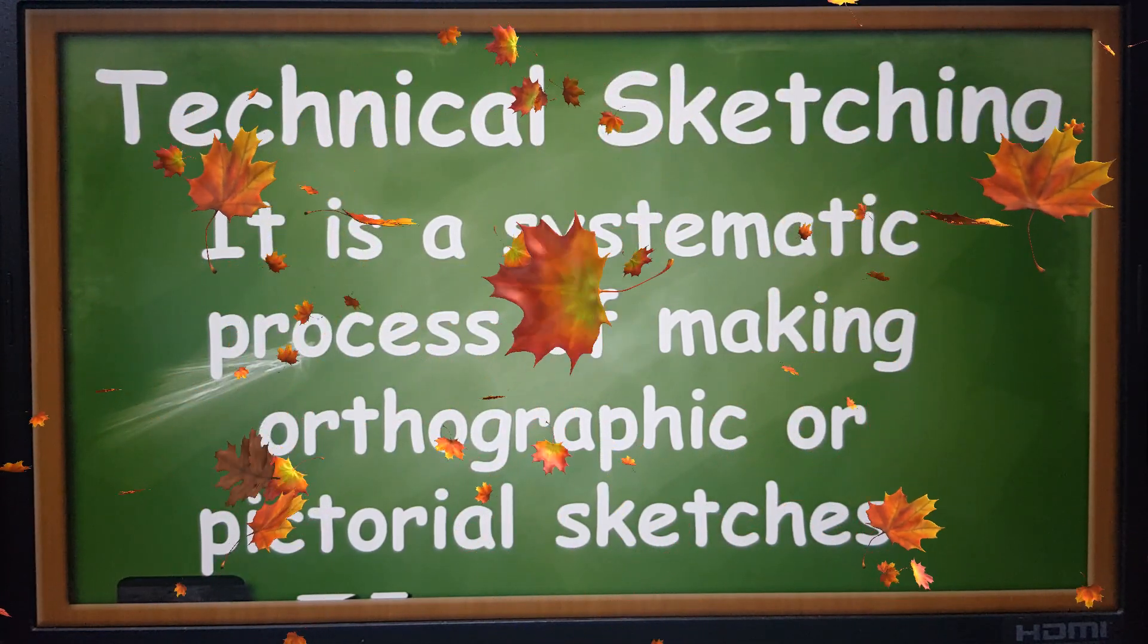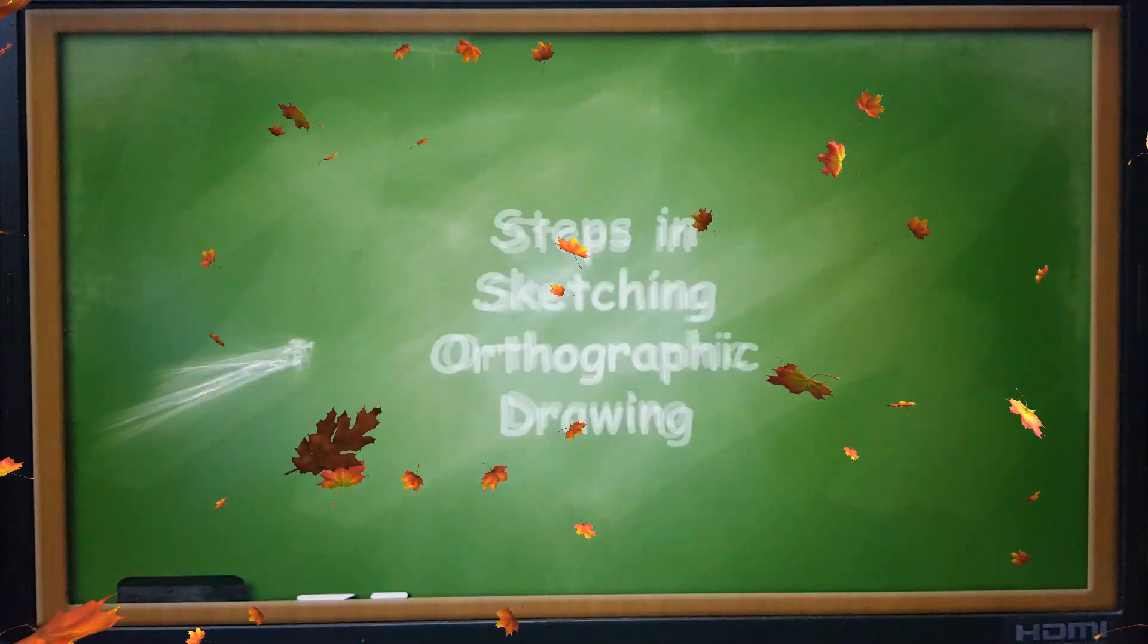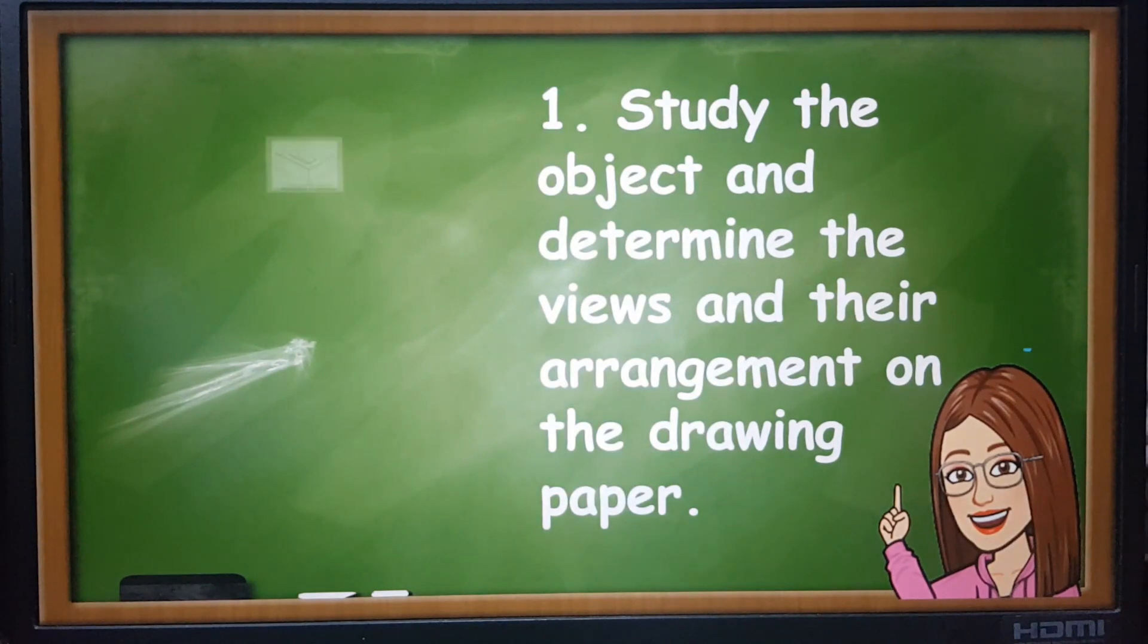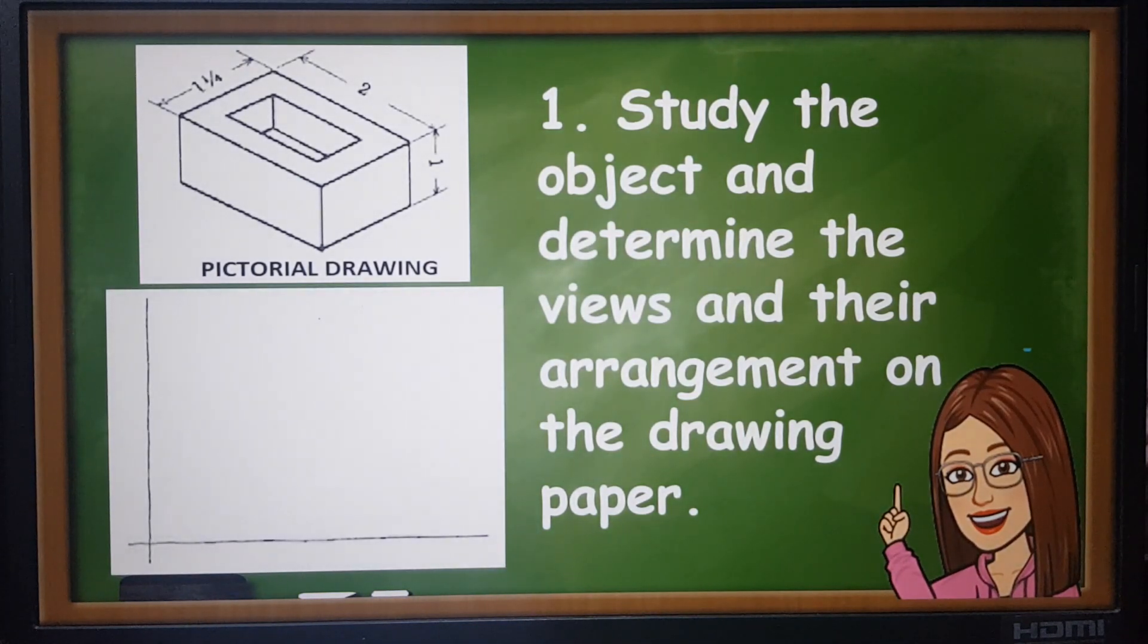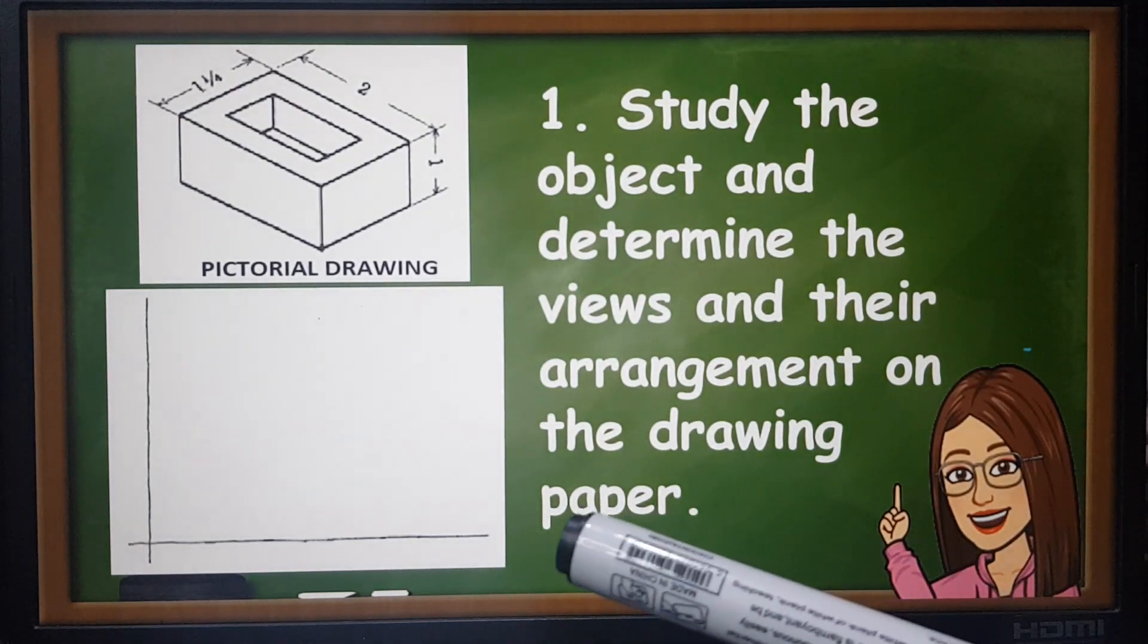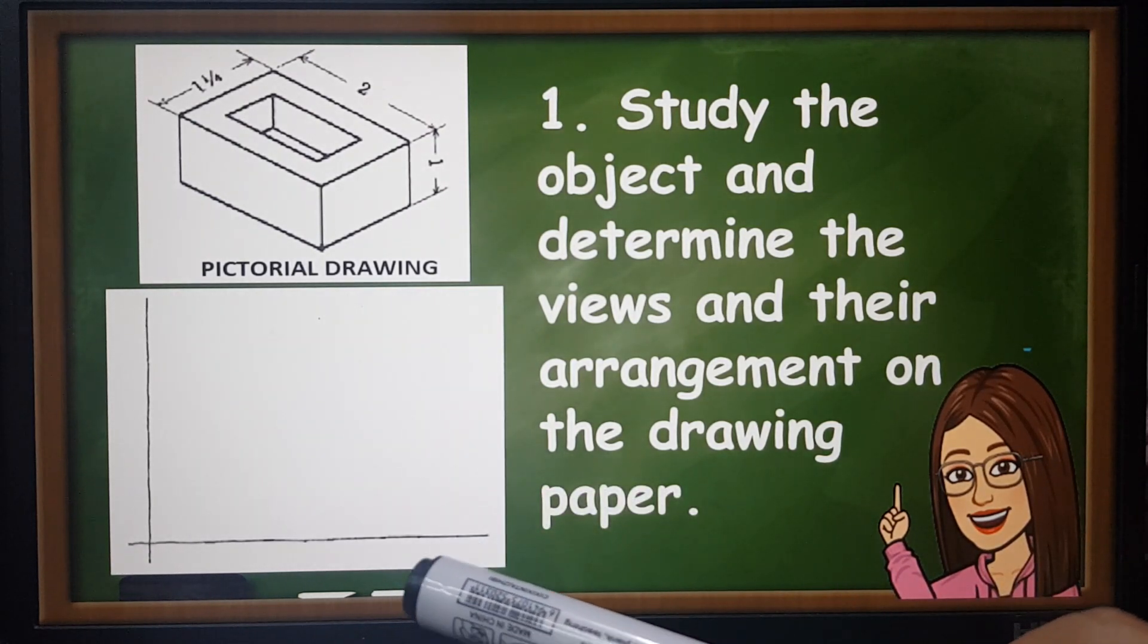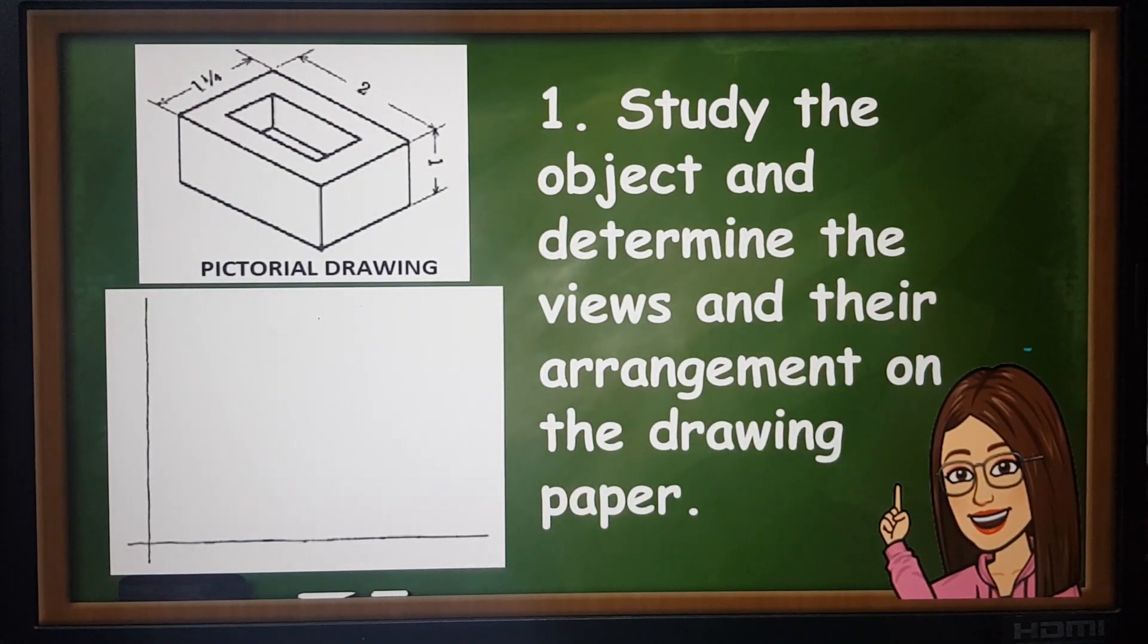Now let's proceed to the steps in sketching an orthographic drawing. Number one: study the object and determine the views and their arrangement on the drawing paper. In this case you're going to use very light lines for your construction line. Vertical line first, followed by a horizontal line.